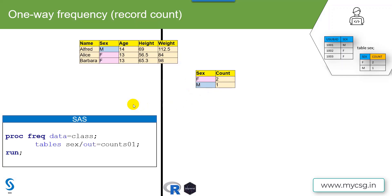In SAS there are multiple ways to do this, but one approach is to use the frequency procedure, which is PROC FREQ. For that, we need to specify the name of the input dataset using the DATA= option, and then we have a TABLE statement in which we specify the name of the variable.